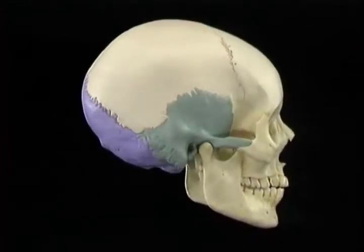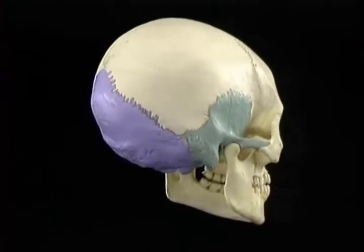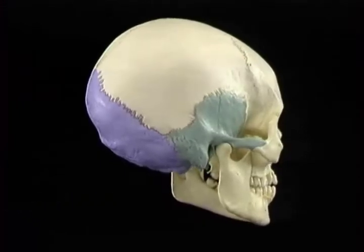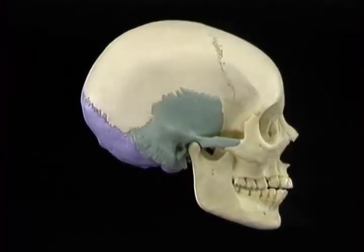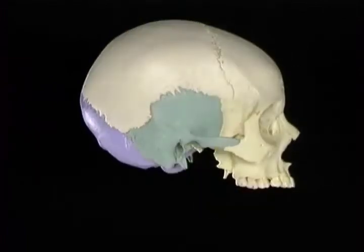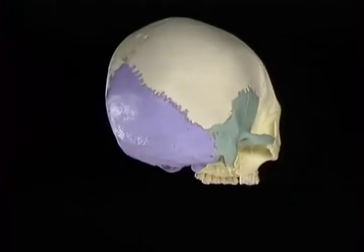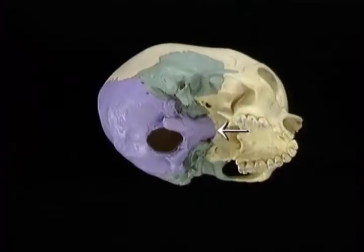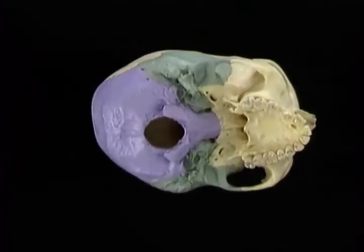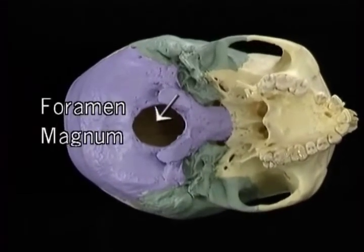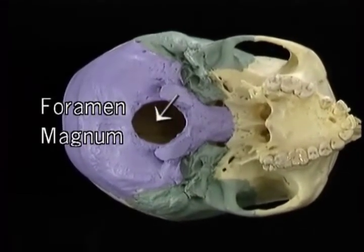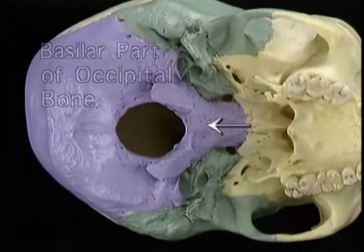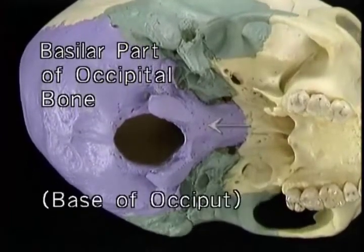The two bones of the cranium that we're concerned with at present are the occipital bone and the lower part of the adjoining temporal bone. To see the full extent of the occipital bone, we'll take the mandible out of the picture. The occipital bone extends all the way from the back to underneath. The most striking feature is this large opening, the foramen magnum, through which the spinal cord and its accompanying structures pass. The part of the occipital bone in front of the foramen magnum is called the basilar part, often referred to as the base of the occiput.